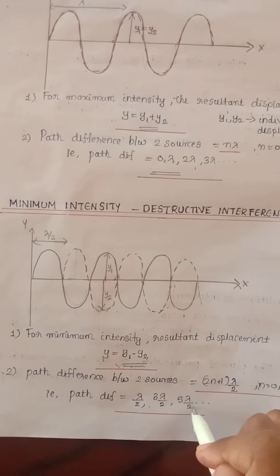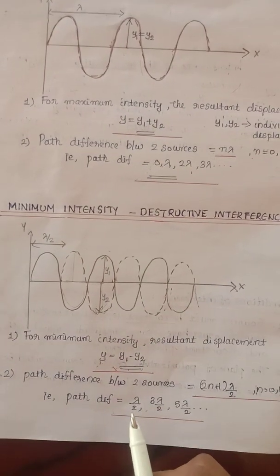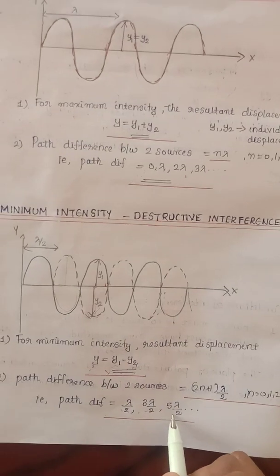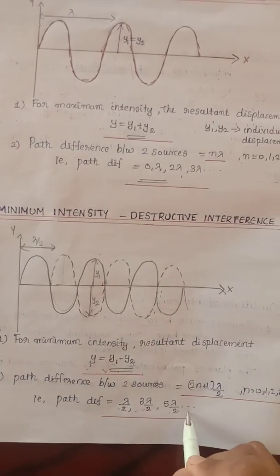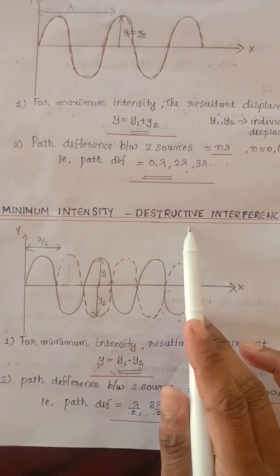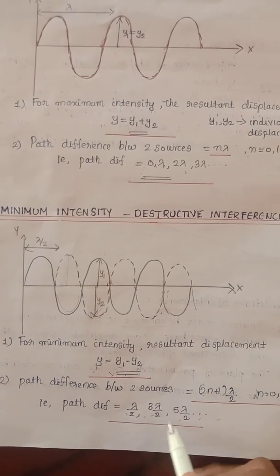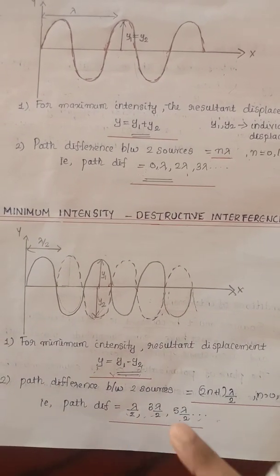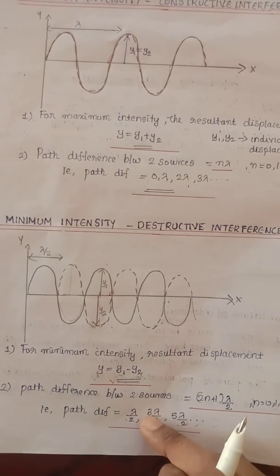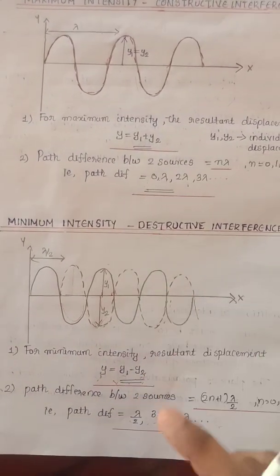The path difference is 5 lambda by 2. So path differences for destructive interference are: lambda by 2, 3 lambda by 2, 5 lambda by 2, 7 lambda by 2 — these are odd multiples of lambda by 2. That path difference corresponds to destructive interference.